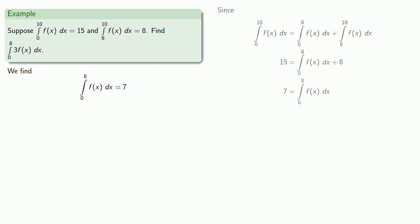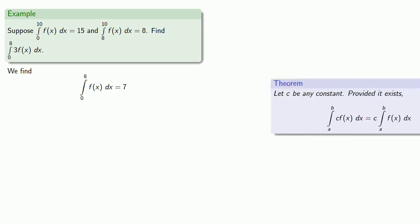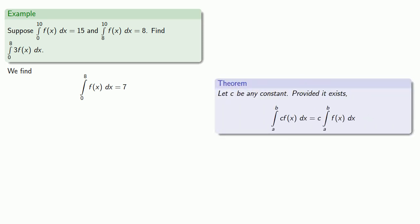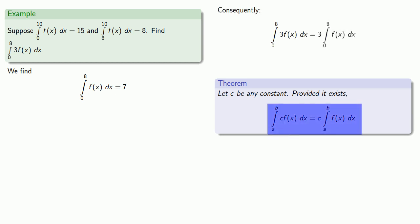What we're looking for is the integral from 0 to 8 of 3 times f of x. We have the right interval from 0 to 8, but we just don't have the right integrand. We'll pull in our second theorem, which allows us to multiply the integrand by any constant we choose — 7, negative 3, pi, square root of 2, any number. So choosing 3, our theorem says the integral of 3 times the function is 3 times the integral of the function, and that allows us to find the value.